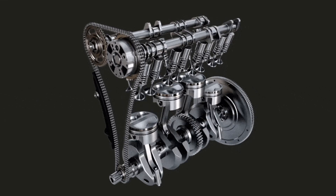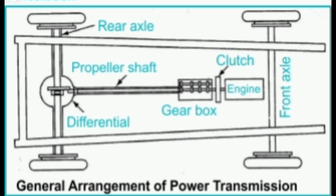The internal combustion engine generates power transmitted to the road wheels through the rotation of the crankshaft. This rotary motion relies on friction between the road and the wheel surface to move the automobile. The automobile transmission system comprises various components working together to smoothly and efficiently transmit the crankshaft motion to the road wheels.